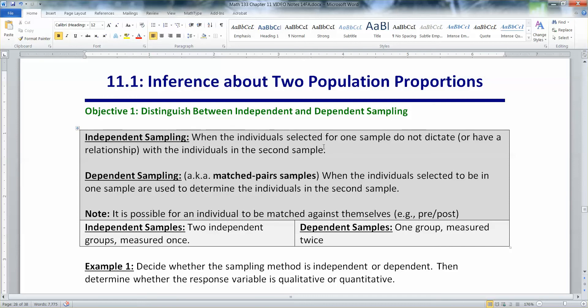Dependent sampling, also known as matched pair sampling, is when the individuals selected in one sample do determine the individuals in the second sample. So, for example, husbands and wives, brothers and sisters, that kind of thing.